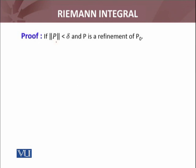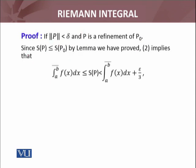If ||P|| < δ and P is a refinement of P₀, then the previous inequalities that I just constructed will both be true for P. Furthermore we have, since S(P) ≤ S(P₀), we know that for a refinement, the upper sum is smaller.